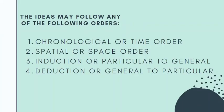The ideas in a paragraph may follow any of the following orders. A paragraph can be chronological, or time order. This means that events are sequenced in order of their occurrence. For example, in cooking adobo, you write a paragraph indicating the steps of cooking adobo. This is an example of chronological order — it shows steps and sequence.